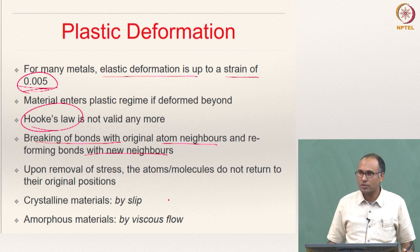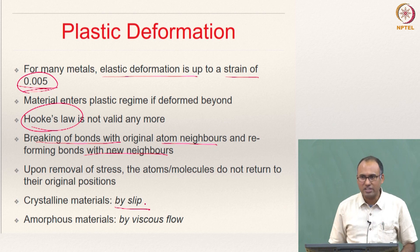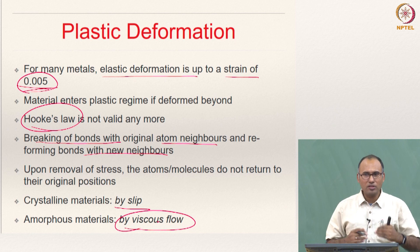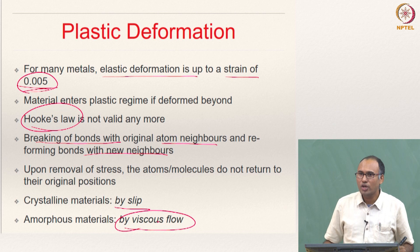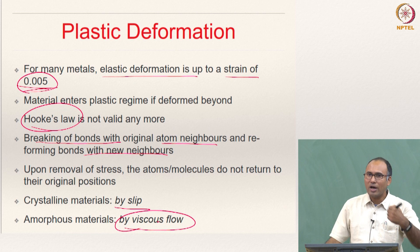For crystalline materials, this plastic deformation happens by slip, which we have discussed extensively. For amorphous materials there is a different mechanism. You will also have plastic deformation in amorphous materials, but because there is no structure to amorphous materials, you cannot explain the deformation through slip. So you have to resort to other mechanisms which can be used to explain the plastic deformation.